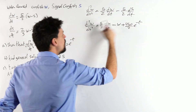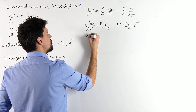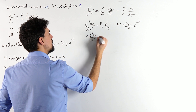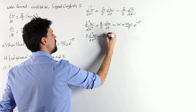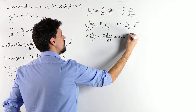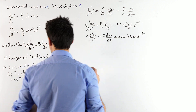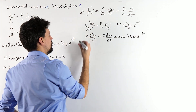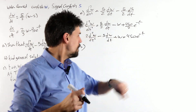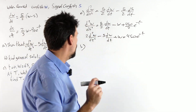Now multiply everything by 2 and collect it all on the correct side. I get: 2(d²W/dt²) − 5(dW/dt) + W = 450e^(−t). Okay. Now we need to solve that — second order, let's go.